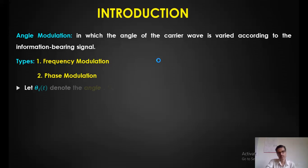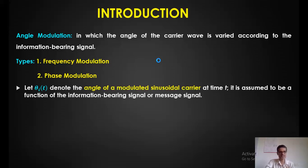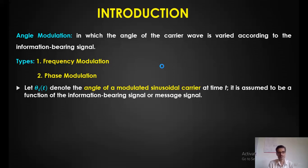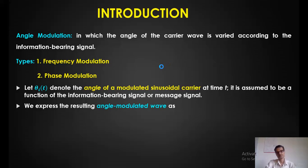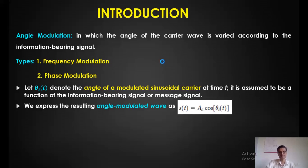Let θᵢ(t) represent the angle of the modulated sinusoidal signal, which changes with respect to time t. This parameter θᵢ(t) changes proportional to some function of the information-bearing or message signal. As the amplitude of the message signal changes, θᵢ(t) — the angle part of the carrier — also changes.